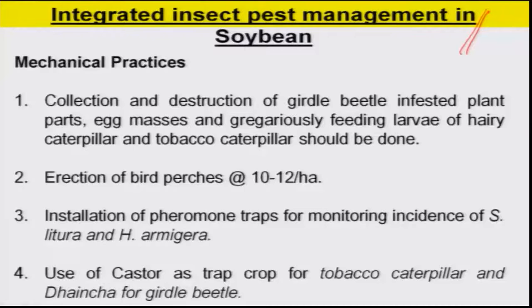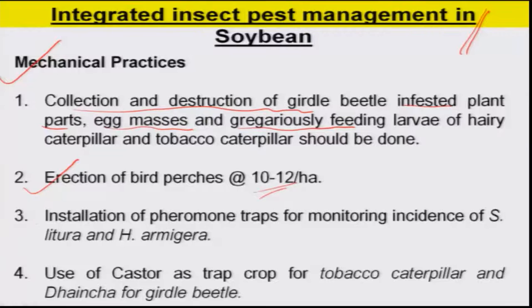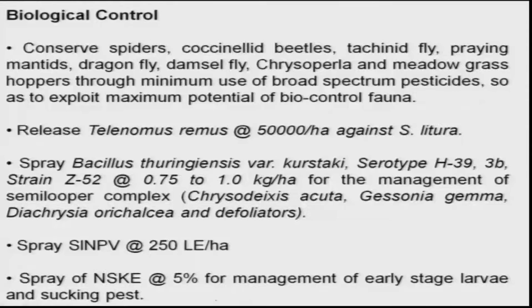Coming to integrated pest management of soybean pests, mechanical practices include collection and destruction of girdle beetle-infested parts. For polyphagous pests that lay eggs in masses, early-stage larvae feeding gregariously can be collected and destroyed. Erection of bird perches at 10 to 12 per hectare is also recommended, along with installation of pheromone traps for Spodoptera and Helicoverpa. Use of castor as a trap crop for tobacco caterpillar and dhaincha for girdle beetle is also an IPM recommendation.